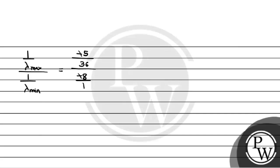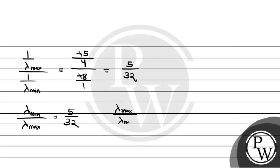Minus minus cancel ho gaya. Toh it is not 36, it is 4 after simplification — 9 and 36 simplify to give 5/32. So lambda_min / lambda_max = 5/32. Therefore lambda_max / lambda_min = 32/5. This is our required answer.